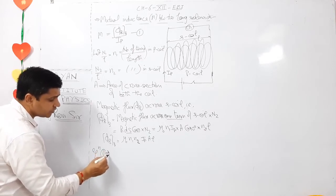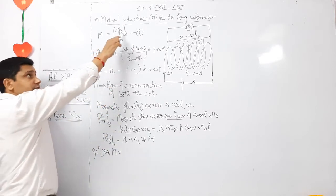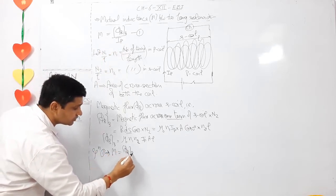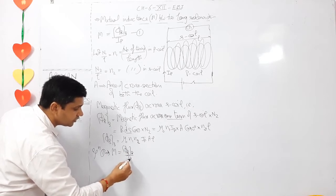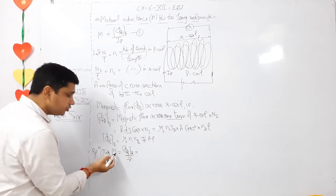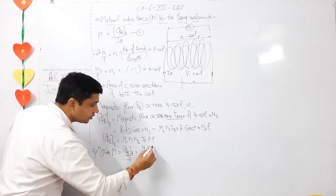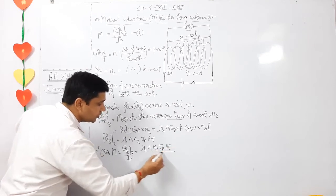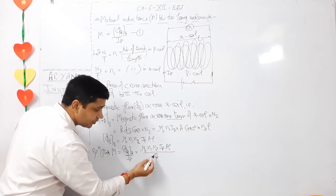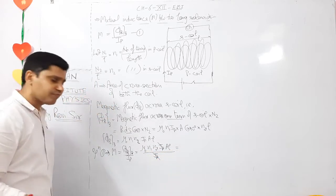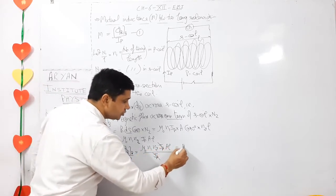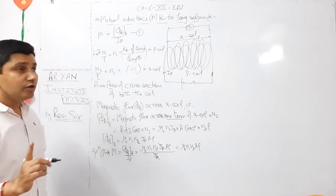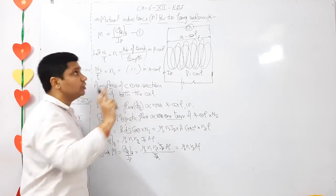Putting this in equation one: mutual inductance M = Φ_B / I_P = μ₀ n1 n2 I_P A L divided by I_P. The current I_P cancels out. The final answer is M = μ₀ n1 n2 A L. This is the mutual inductance between two long solenoids.